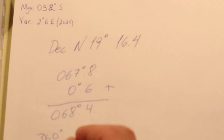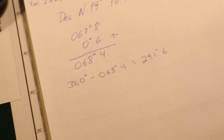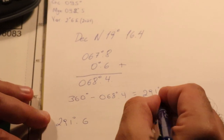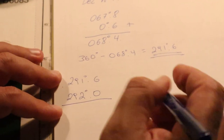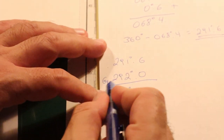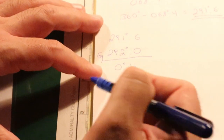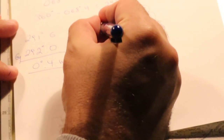This value now needs to be calculated to find the actual sun bearing. It is 360 degrees minus 0.684, which gives us 291.6 degrees. That is the actual true azimuth. The observed bearing from the gyro was 292 degrees, so the difference is 0.4 degrees. Remember: compass best, error west — so this is a west error of 0.4 degrees. That is done.